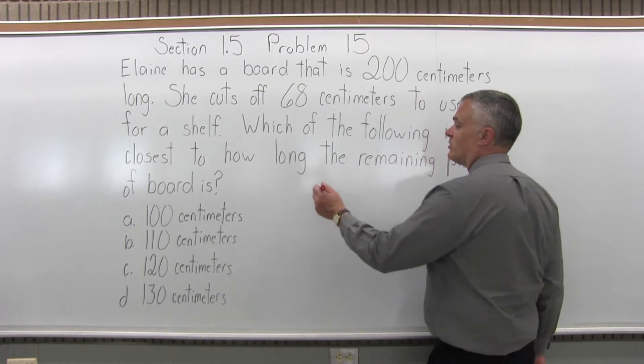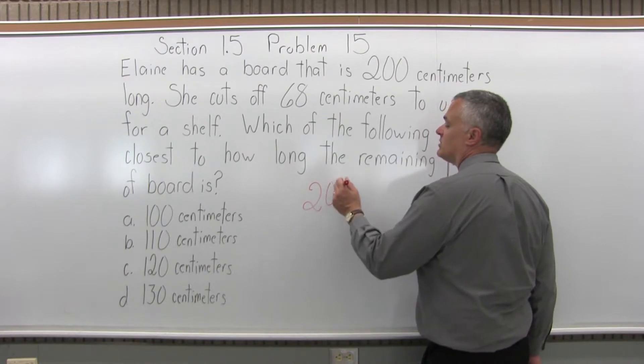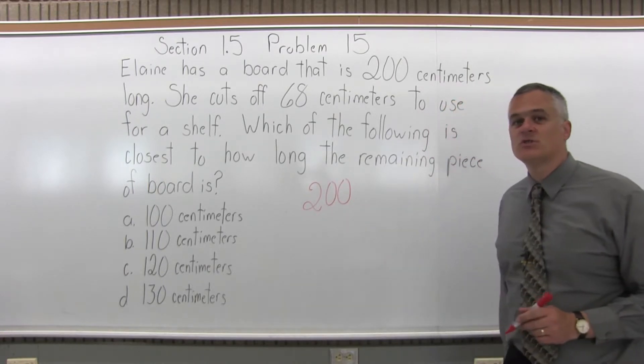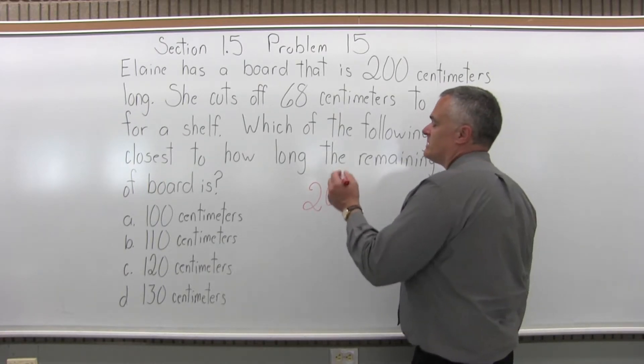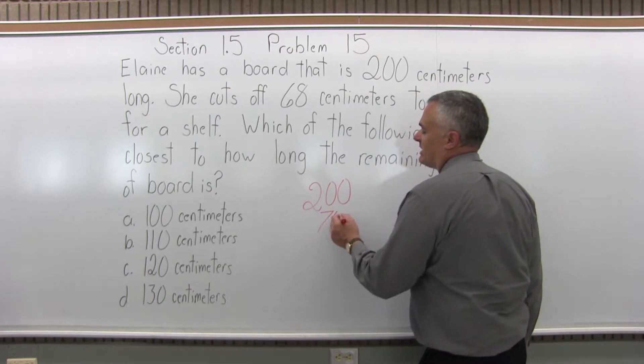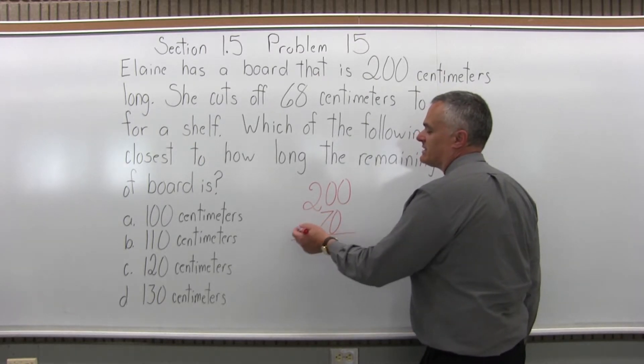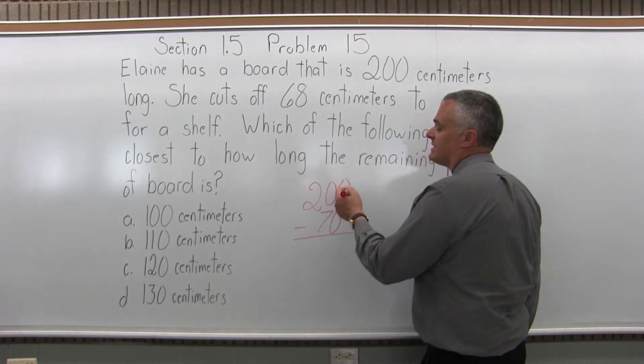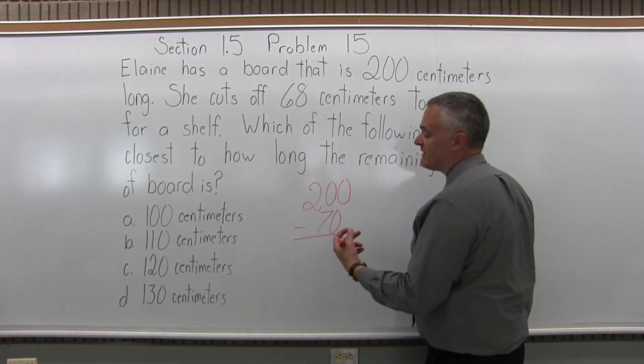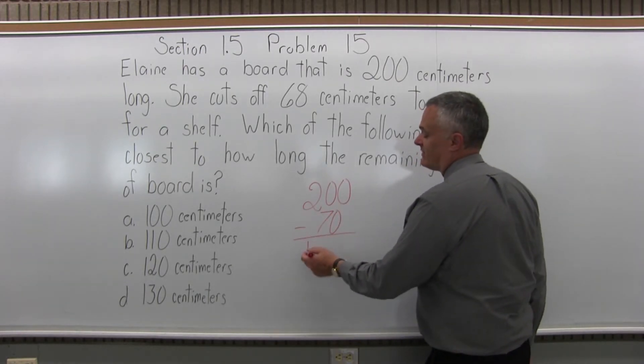So we start with a board that is 200 centimeters long. 68 centimeters is removed. So just as an estimate, that's pretty close to 70, which makes the math easier. So if you start with a board that's 200 centimeters long, you remove 70 or approximately 70,